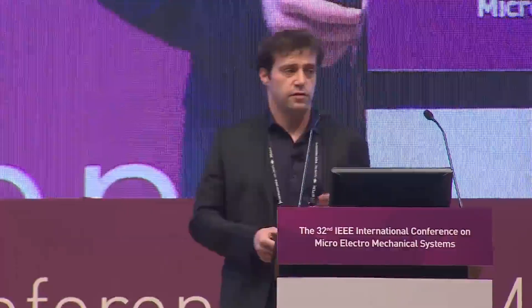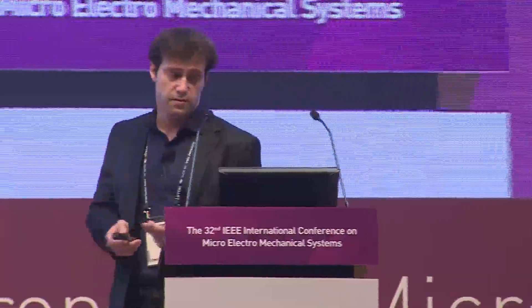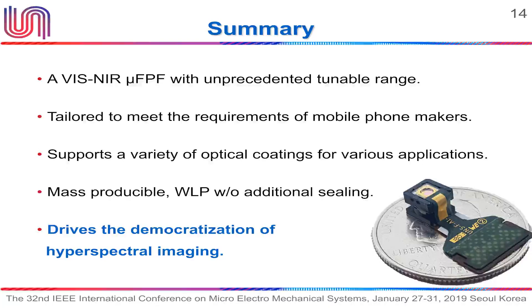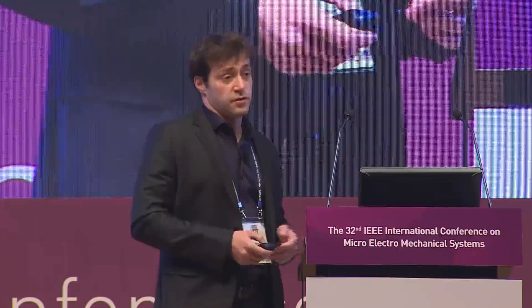In summary, we developed a new concept of a tunable Fabry-Perot filter with a very broad tunable range that can support a variety of optical coatings for various applications. It was designed bottom-up to be cell phone compatible and meets all reliability requirements of mobile phone makers. It is small enough to be easily embedded in cell phones, mass-producible, and doesn't require additional sealing. We believe this device will disrupt the mobile phone industry and find its way into mobile phones, just as accelerometers and gyros did a few years ago.